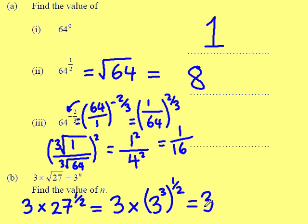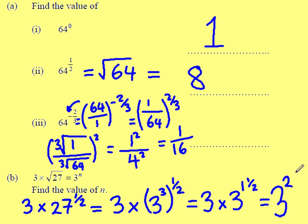Simplifying further: when they're in brackets, the powers get multiplied. So 3 times a half, or 3 divided by 2, is 1.5 — or 1 and a half. I can write that as 3 times 3 to the power of 1 and a half. When I multiply powers, I add them, giving a final answer of 3 to the power of 2 and a half. Therefore, n must be 2 and a half, or 2.5 as a decimal.